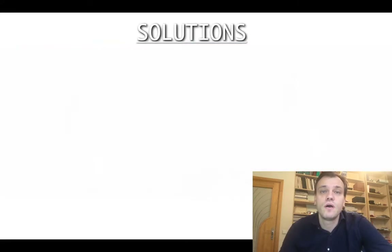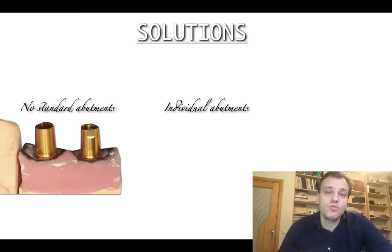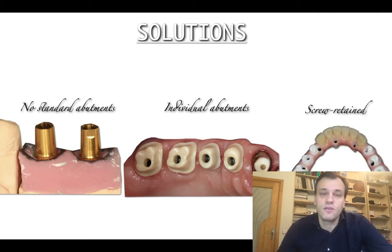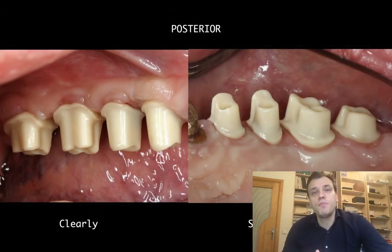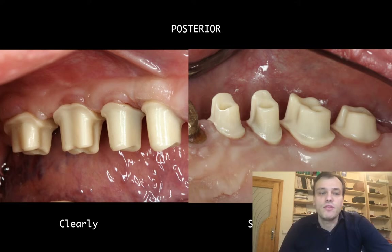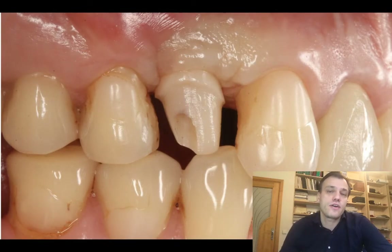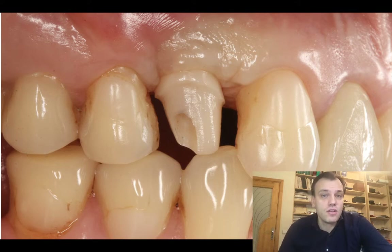What are our solutions? Many solutions have been presented. First of all, we do not use standard abutments for intraoral cementation. Instead, we recommend individual abutments or screw-retained restorations. Since our topic today is cementation, let's look at how individual abutments should be used to reduce cement remnants. In a posterior case, it's not a problem because we can clearly design supra-gingival margins and remove cement remnants easily.